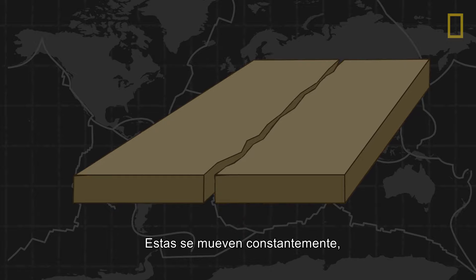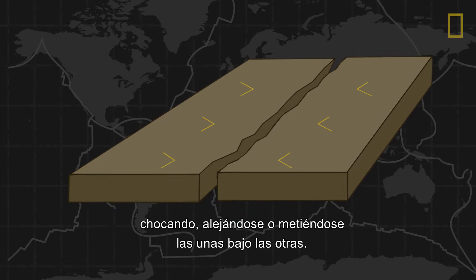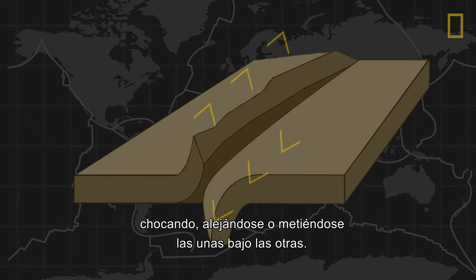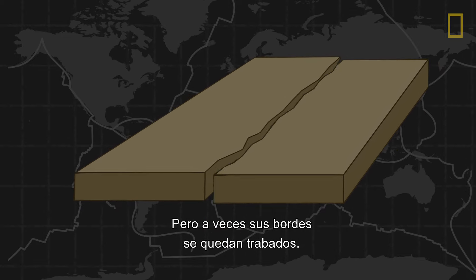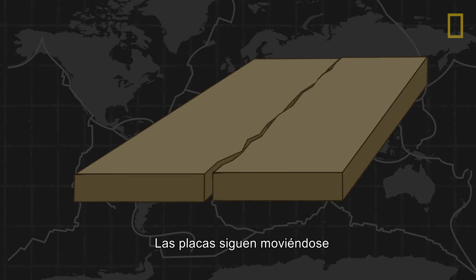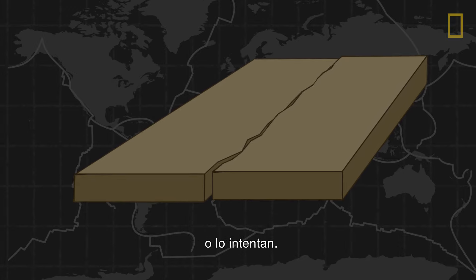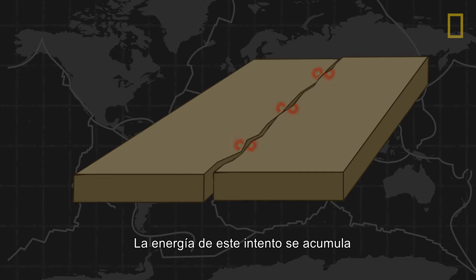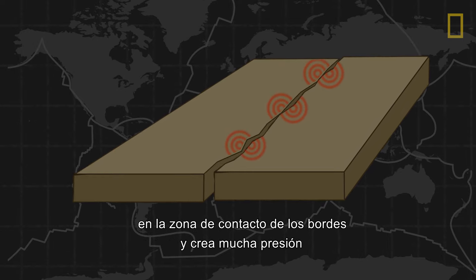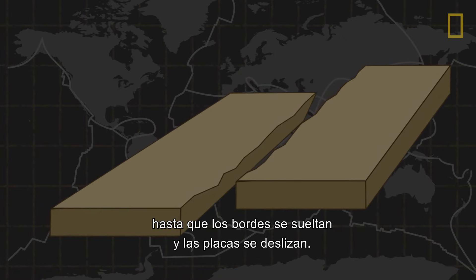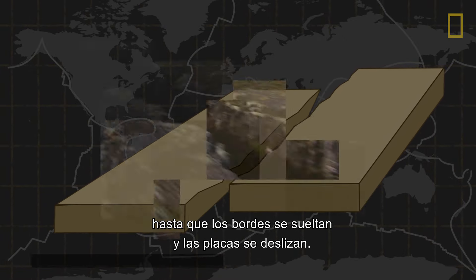Tectonic plates are constantly moving, either against, away, along, or underneath each other. But sometimes their edges may catch and stick. The plates, however, continue to move — or at least attempt to. Energy from this attempted movement builds around the edge's sticking point, creating immense pressure until the edges are forced to let go and the plates slip.